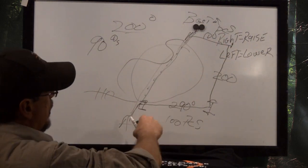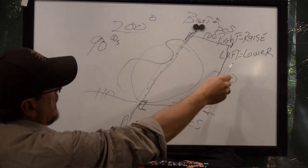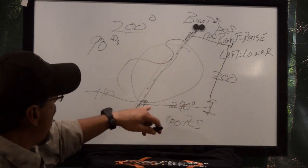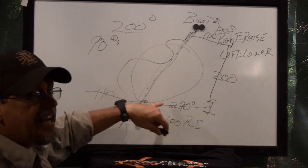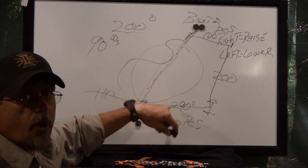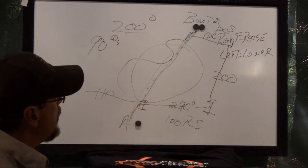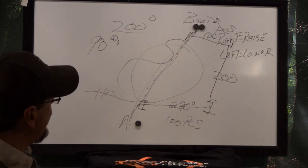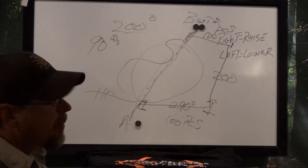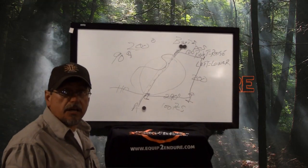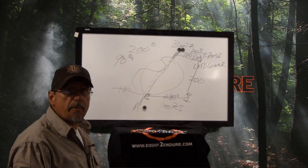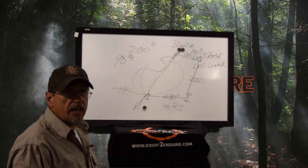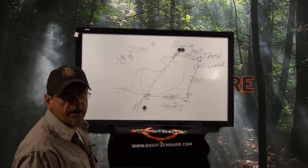So remember, right raise, left lower, 90 degrees off of your original track. Pretty basic, pretty simple, easy to remember. If you have any more questions, email me at Bobby at Equip to Endure. Just remember, if you're not always prepared, you're never prepared. Thank you.